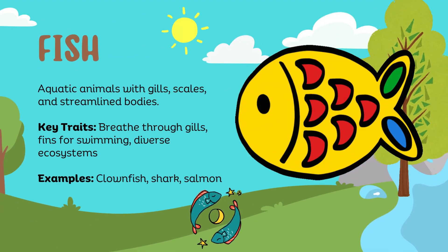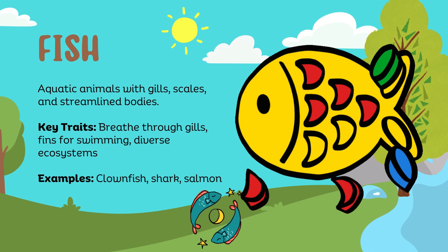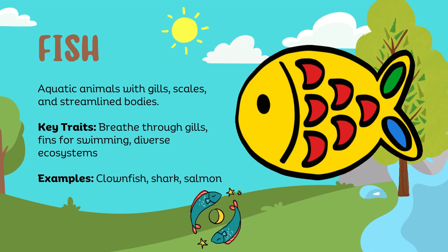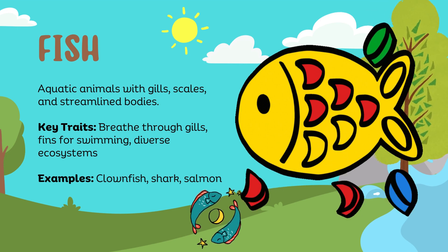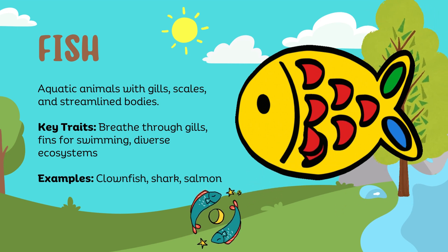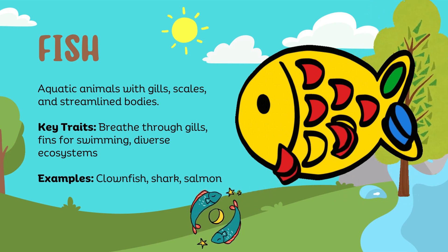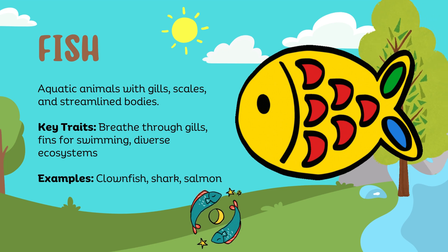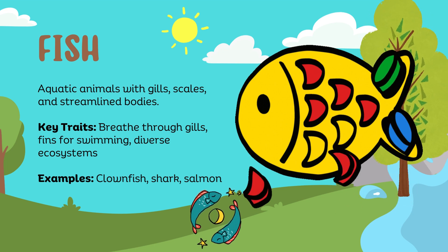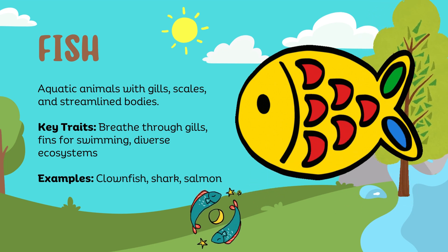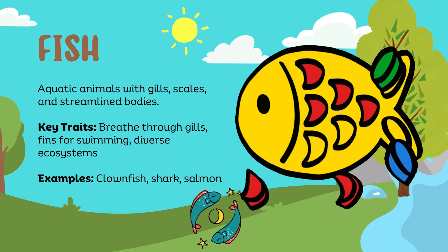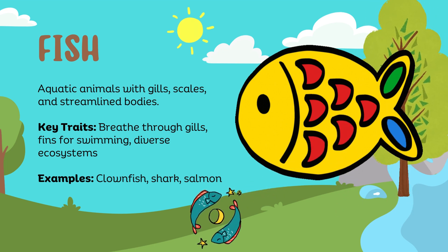Fish: aquatic animals with gills, scales, and streamlined bodies. Key traits: breathe through gills, fins for swimming, diverse ecosystems. Examples: clownfish, shark, salmon.